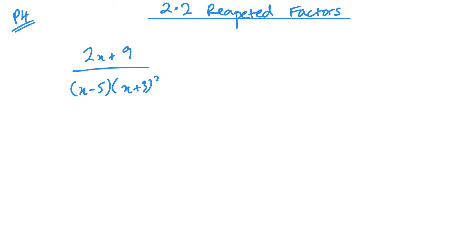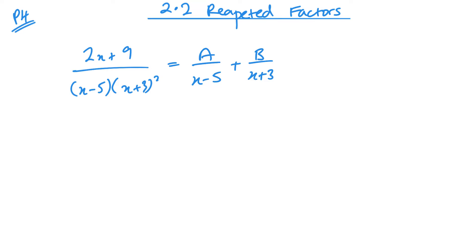So in the bottom, the x plus 3 here is squared, and that will lead to a repeated factor. So when I'm splitting this up, I have a over x minus 5, b over x plus 3, and c over x plus 3 squared.